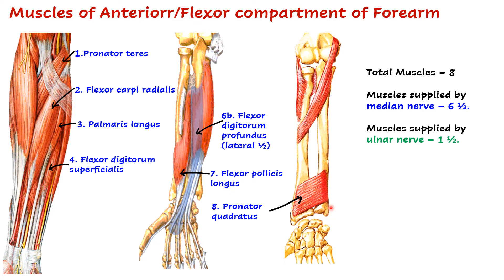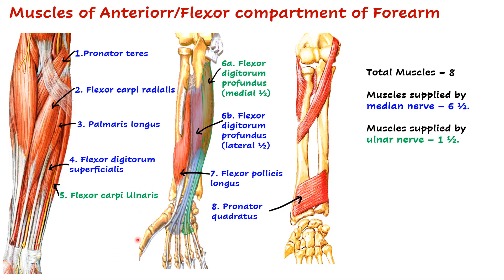Only one and a half muscles are supplied by the ulnar nerve: flexor carpi ulnaris — easy to remember because the word 'ulnaris' is there — and the medial half of flexor digitorum profundus. Remember, medial half means the ulnar side, so that half of flexor digitorum profundus is supplied by the ulnar nerve.